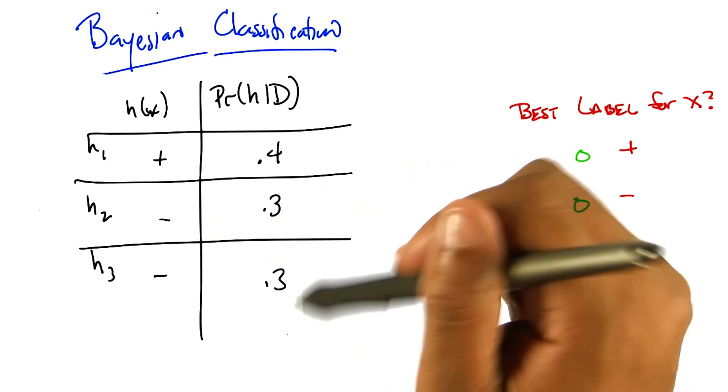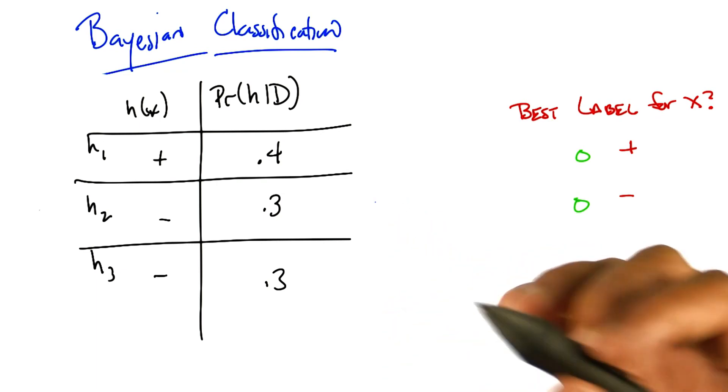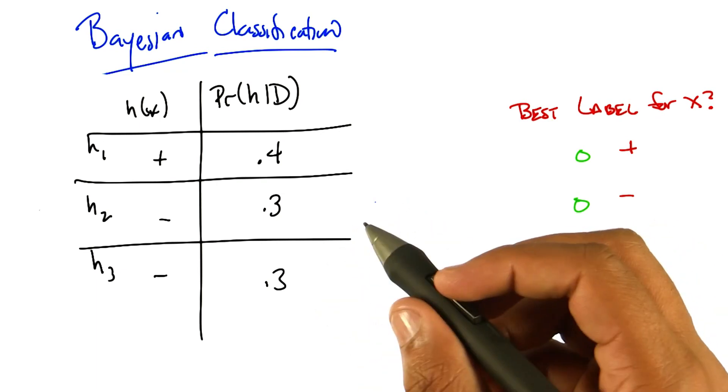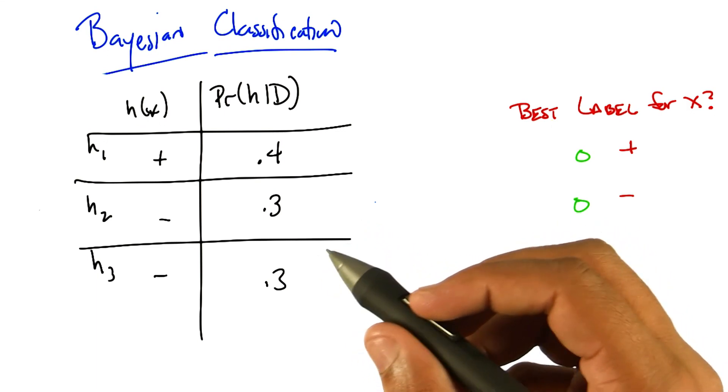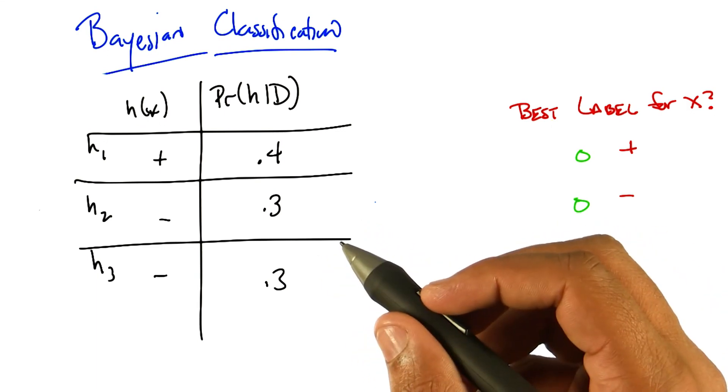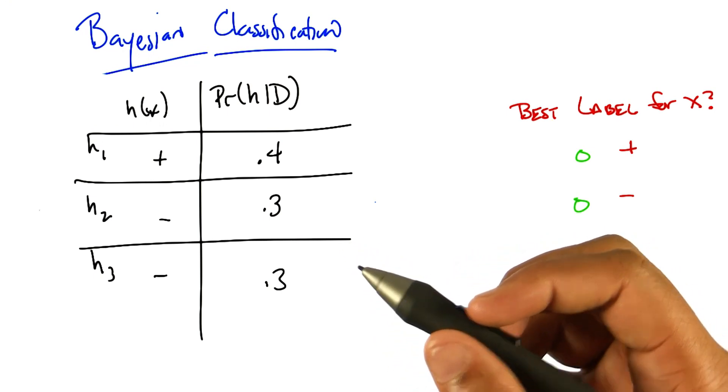Wait, hang on. So okay, I see. That corresponding hypothesis given the data, what's x? X is some input. It doesn't matter. Just like it doesn't matter what the data is. Just call it, the x is x. It's just some object out in the world, and each hypothesis labels it plus or minus.